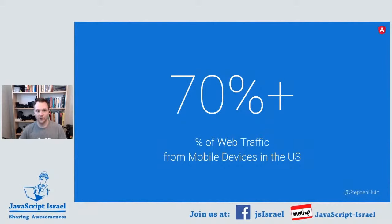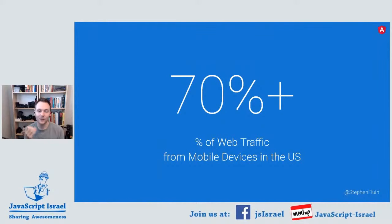Over 70% of web traffic in the US actually comes from mobile devices. Most people aren't using your website on a desktop computer — they're using a mobile form factor, with unreliable internet connectivity and lower-CPU devices. We need to bring that empathy with us every day. This number is higher across the globe; in China it was over 90% from the statistics I saw.